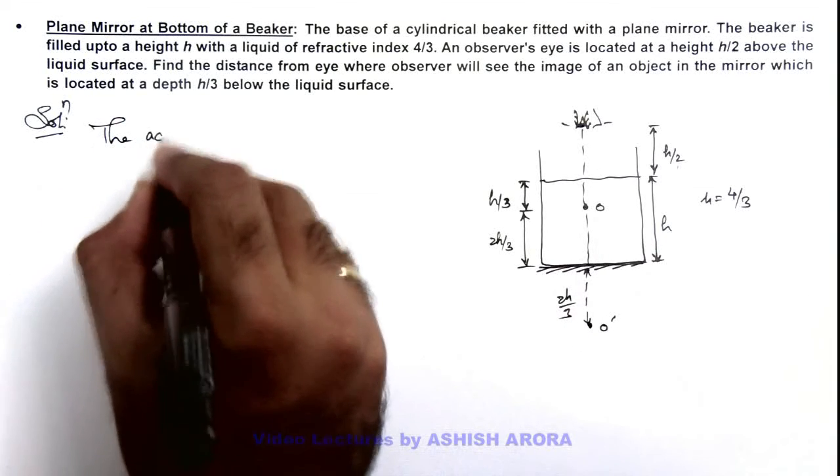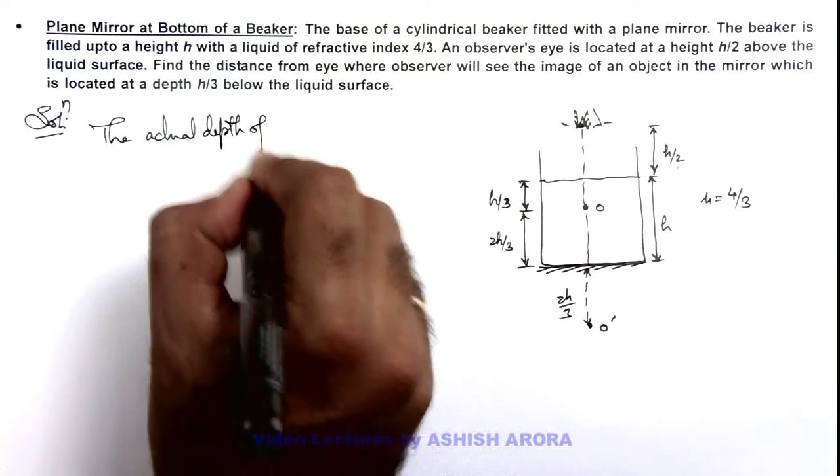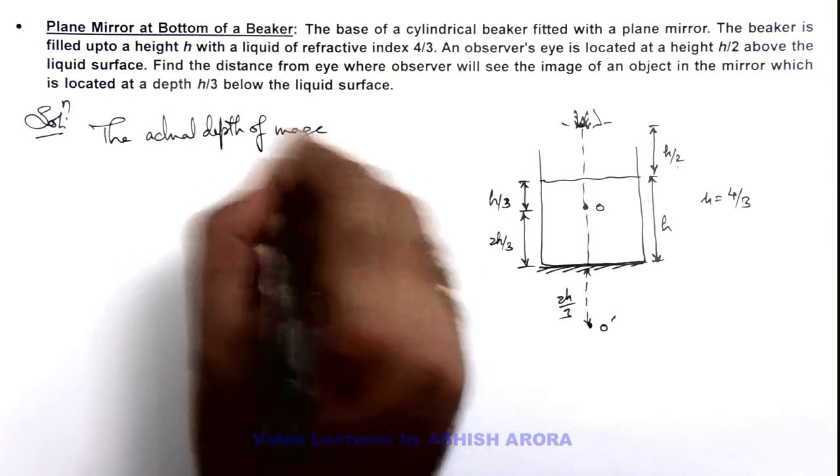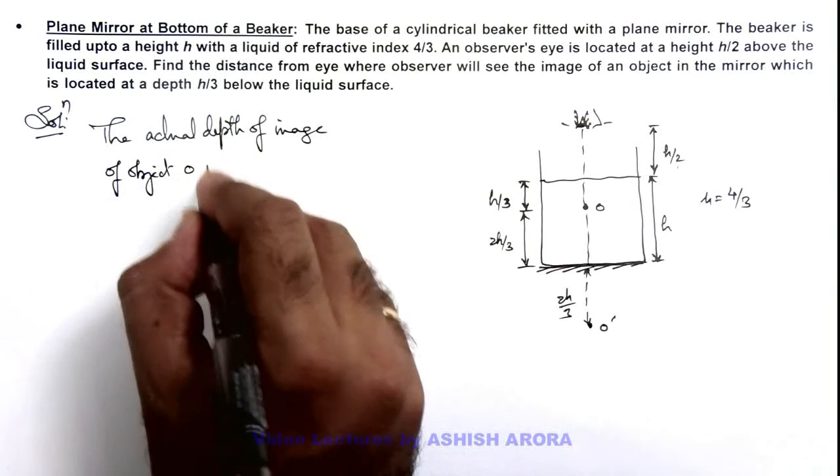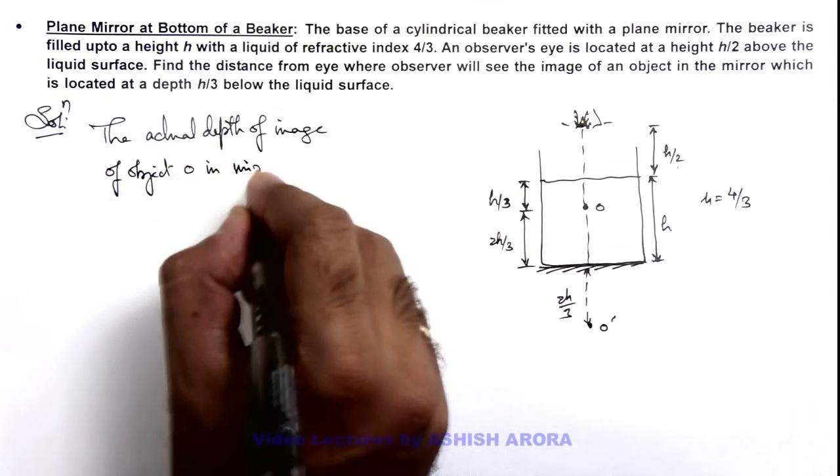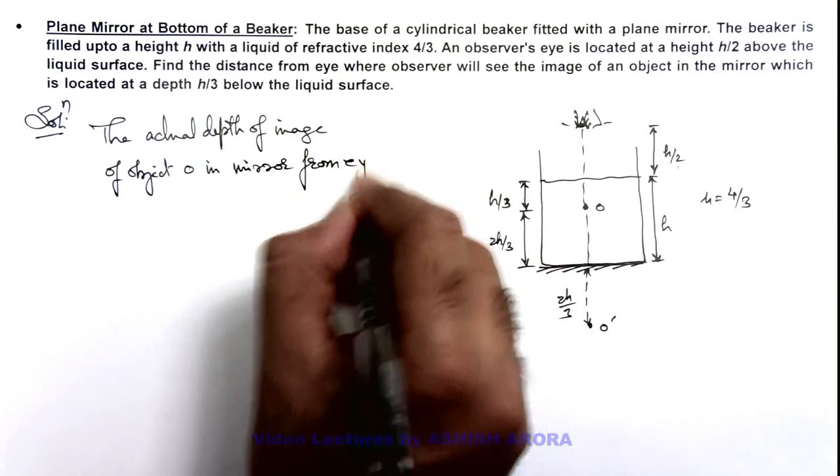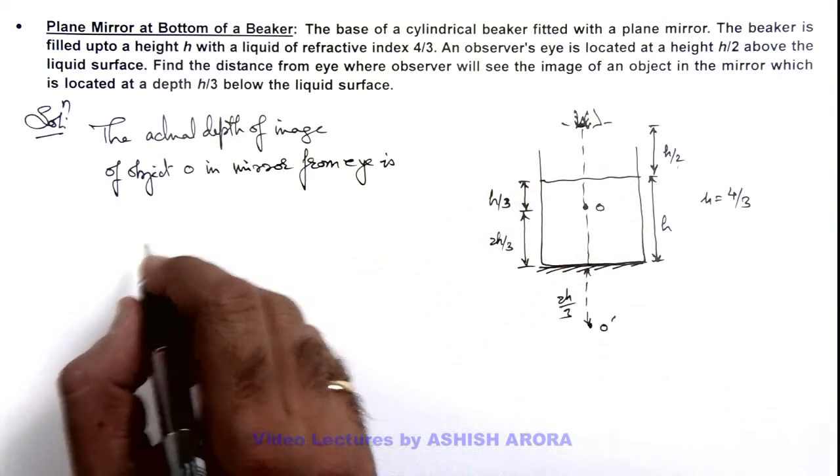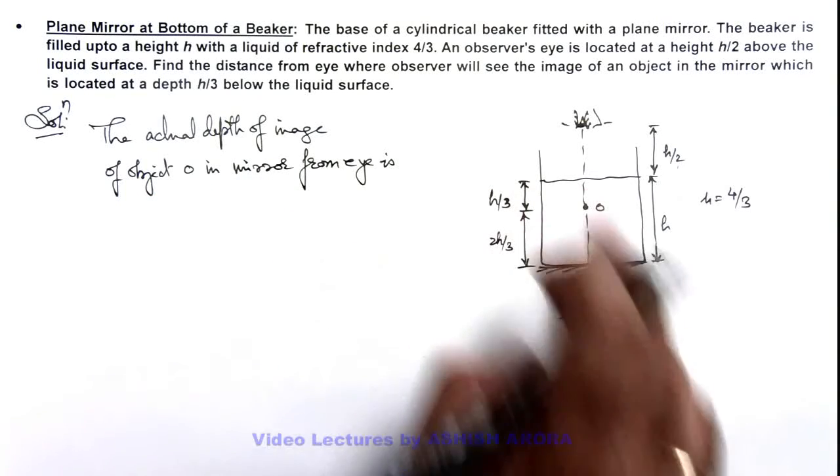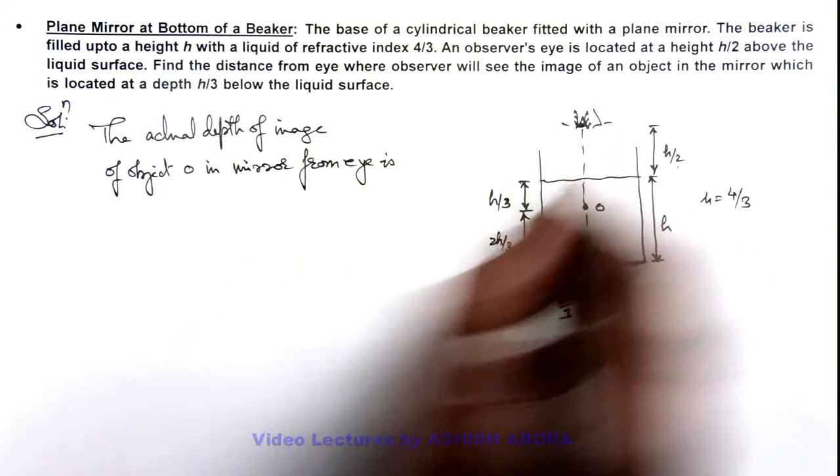The actual depth of image of object O in mirror from eye I is: this distance is 2h/3 plus h plus h/2.